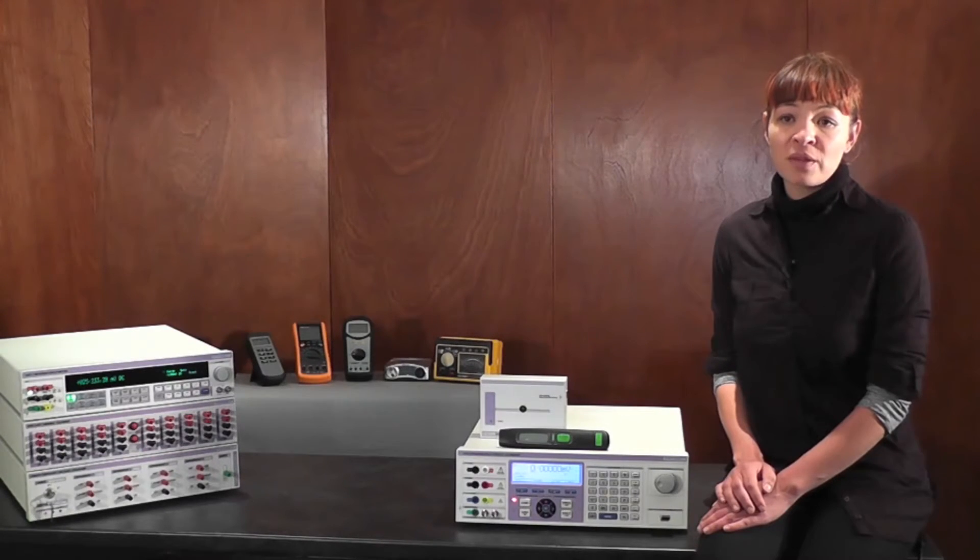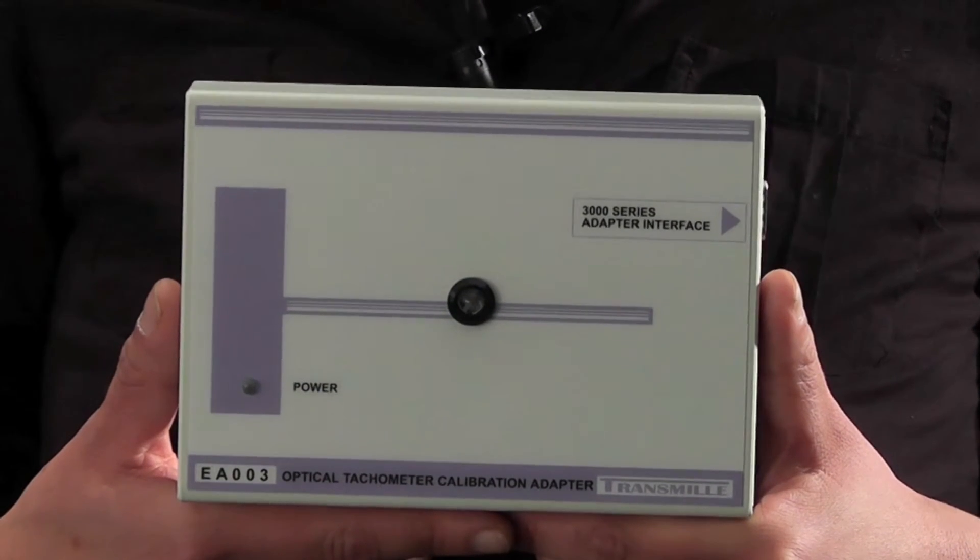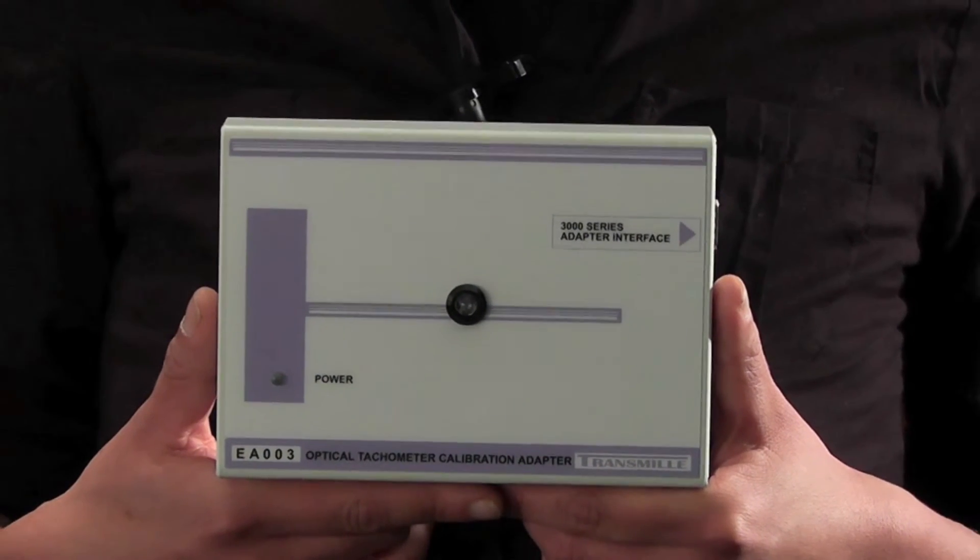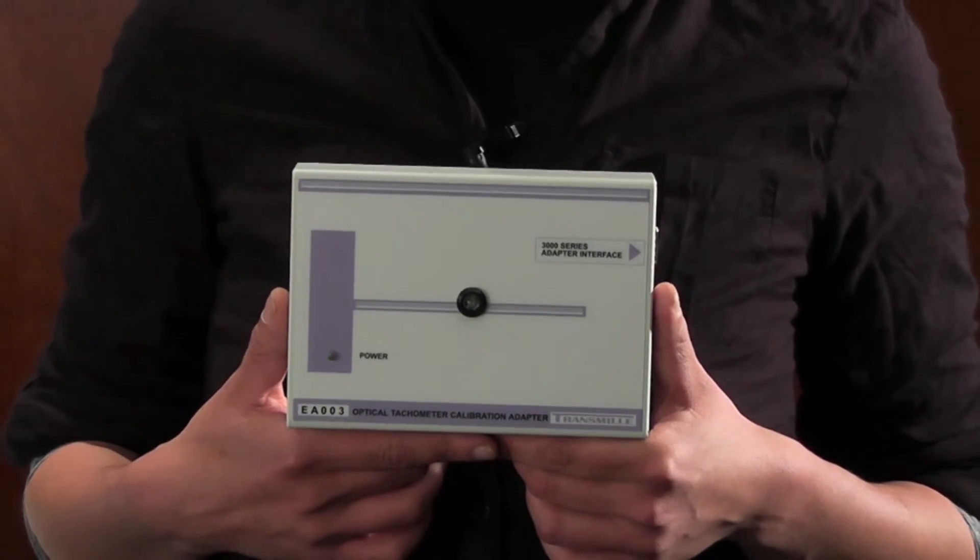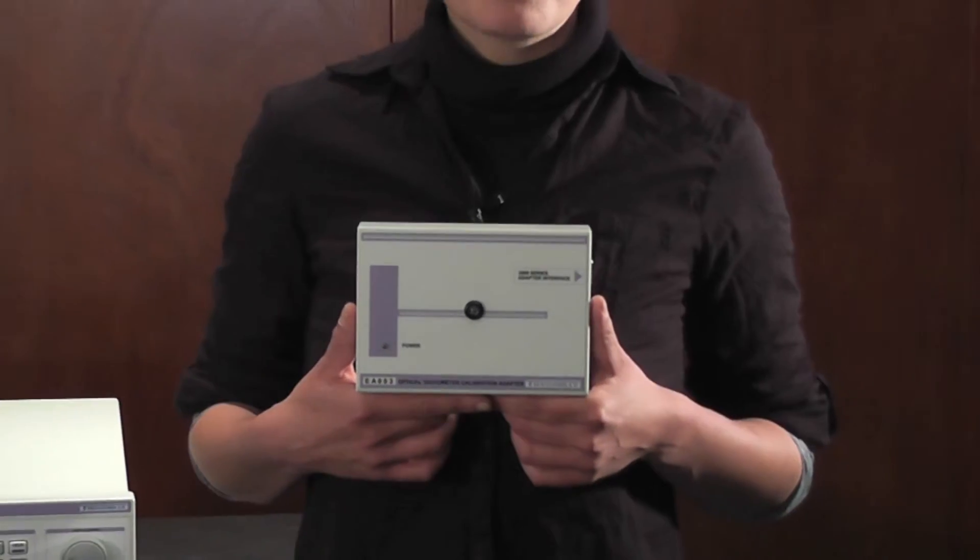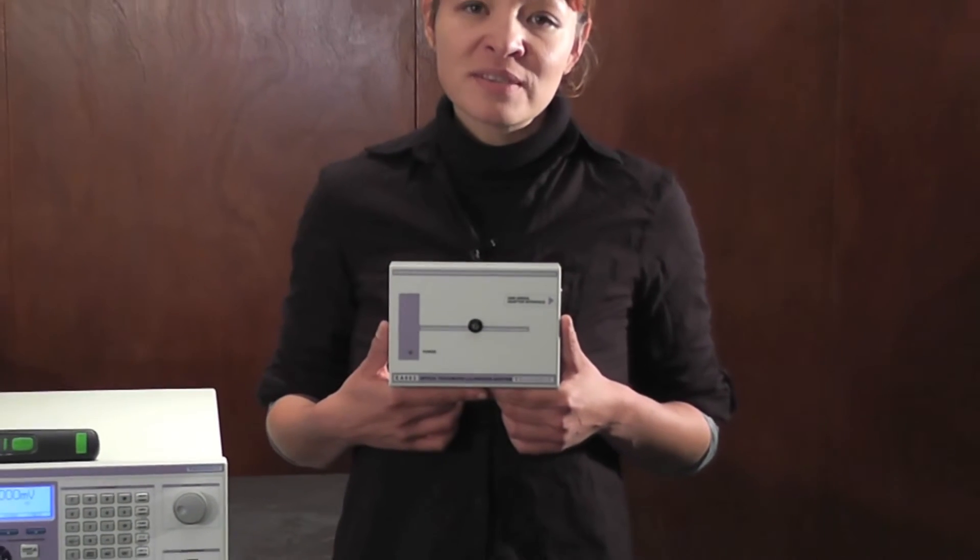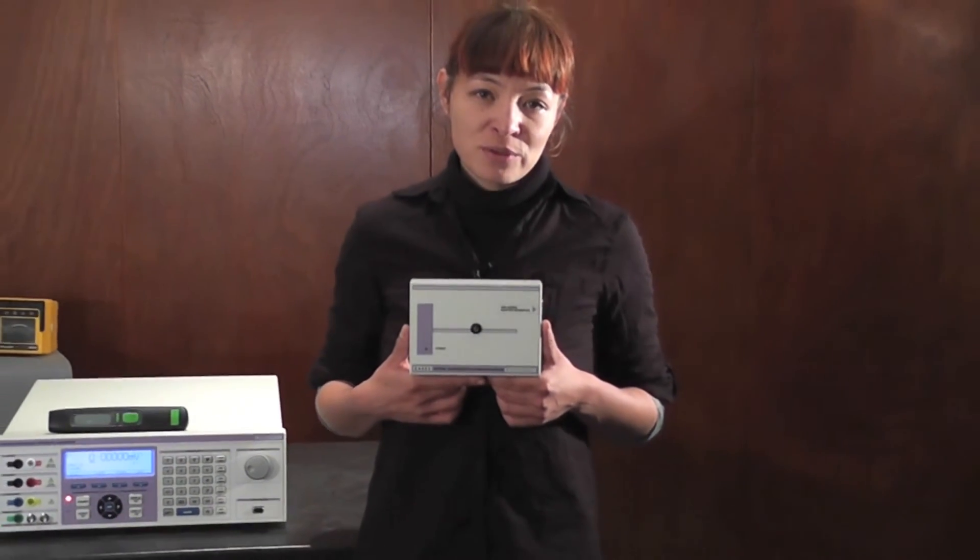Quality control systems in place within industrial work environments typically require the calibration and certification of these devices. The optical tachymeter calibration adapter E8003 is an external adapter that has been designed to be used with the 3000 series calibrator to calibrate optical tachymeters with a range of 60 to 60,000 revolutions per minute.